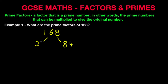Now 2, as you've gathered, is a prime number. So we've got the first prime number in the equation. 84 is not a prime number, so we keep going. Again, 84 — because it ends in 4, we know it can be divided by 2.